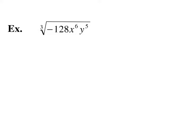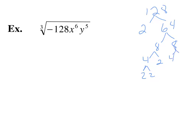Now I have 128, and I'm going to use the tree on it. 128 is 2 times 64, 64 is 8 times 8. Breaking it all the way down, I end up with all 2's — seven 2's in total.